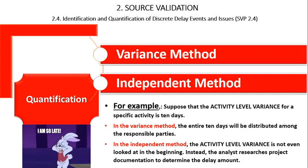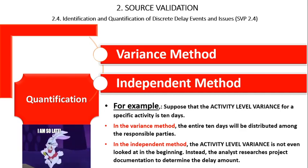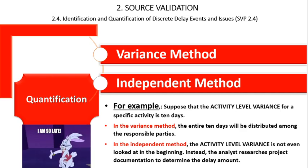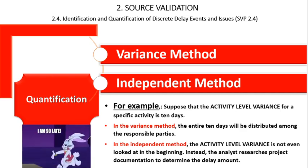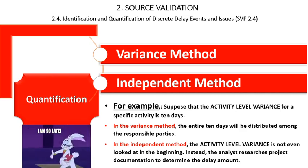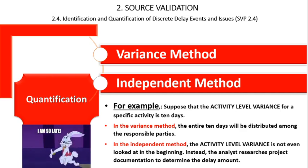Therefore, in the variance method, the analyst is guided to the delay amount by the amount of activity-level variance. On the other hand, in the independent method, the analyst does not review the activity-level variance, but relies on what is written in the documentation to make its determination of delay amount.